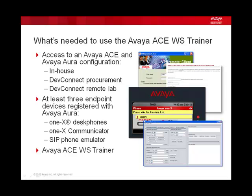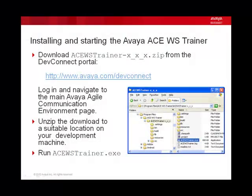Finally, you need to install the Avaya ACE Web Services Trainer on your development machine. The Trainer is distributed as a ZIP file, available as a free download to all DevConnect members from the DevConnect portal. Go to the URL shown and log in. The download link is located on the main Avaya Agile Communication Environment page, which you can access via the Products and SDKs Index. Download the ZIP and extract it to a suitable location on your development machine. To start the trainer, simply run the acewstrainer.exe file.